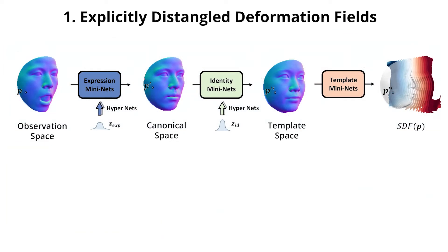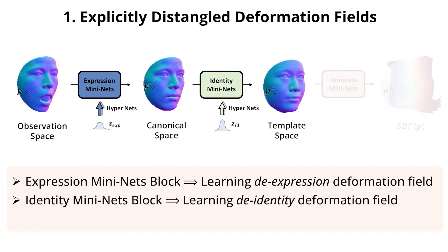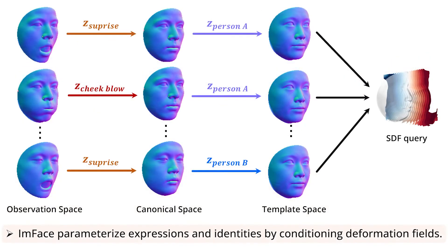ENPHASE consists of three modular blocks to explicitly disentangle face morphs into separate deformation fields. First, a point P in observation space is warped to a canonical space by a learned de-expression deformation field. Next, it is further deformed to a template space by a de-identity field. In the last stage, the SDF value of the double-warped P is queried by a template network, and finally we get an entire implicit 3D face.